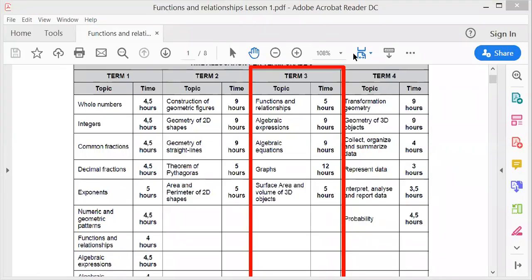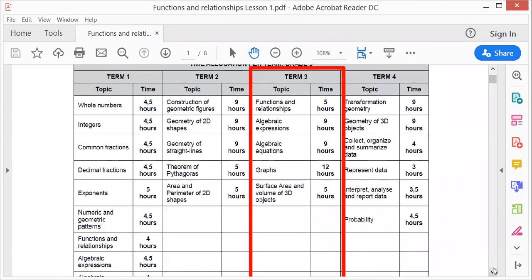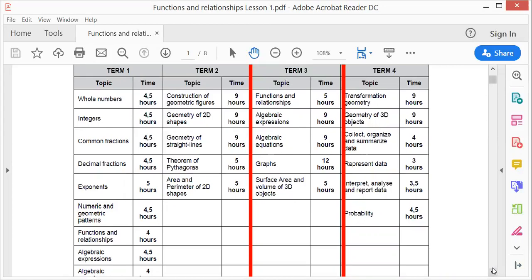Hello, great nights, how are you? Good. The first lesson of term 3. If you look at the syllabus for term 3, you'll see that we're doing functions and relationships and graphs. Those two go together. Then we're doing algebraic expressions, algebraic equations again, and of course surface area and volume of 3D objects. So that is the syllabus for term 3.